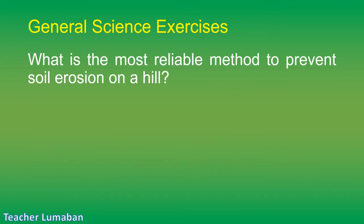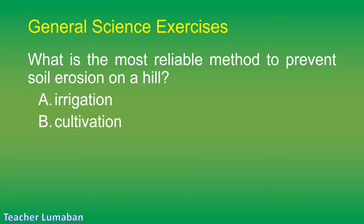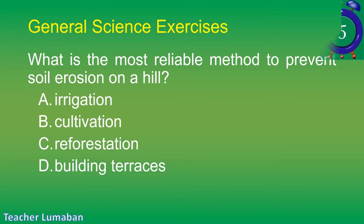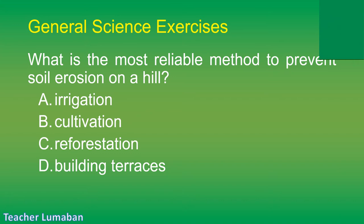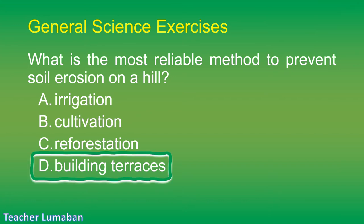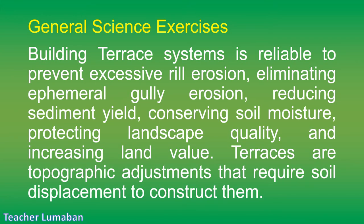What is the most reliable method to prevent soil erosion on a hill? Letter A: irrigation. Letter B: cultivation. Letter C: reforestation. Letter D: building terraces. The correct answer is Letter D: building terraces. Building terrace systems is reliable to prevent excessive rill erosion, eliminating ephemeral gully erosion, reducing sediment yield, conserving soil moisture, protecting landscape quality, and increasing land value.